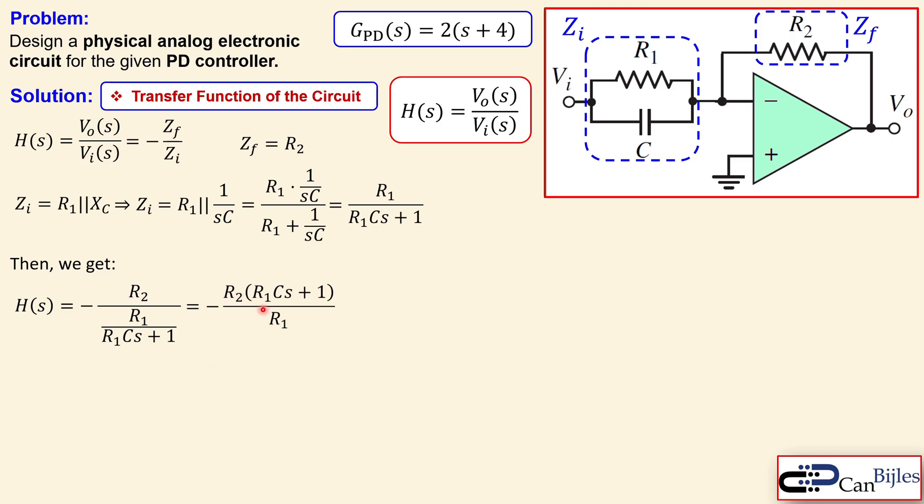Now further simplification is required because we would like to compare this later with this given transfer function. So I would like to isolate this S here as it is here because the coefficient in front of this S is just 1. So I would like to also make this 1. In order to get that 1 I need to get rid of this R1 C. So I need to take it out. In order to take it out I need to do here 1 over R1 C.